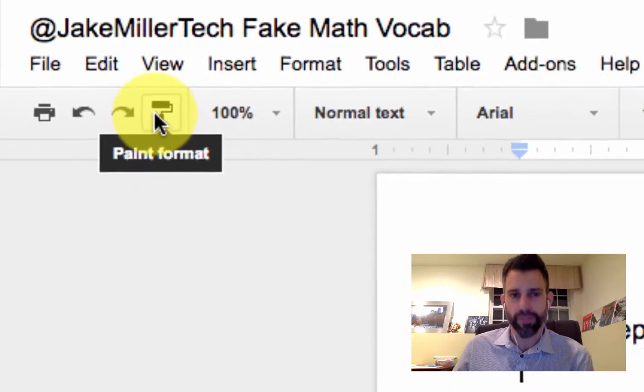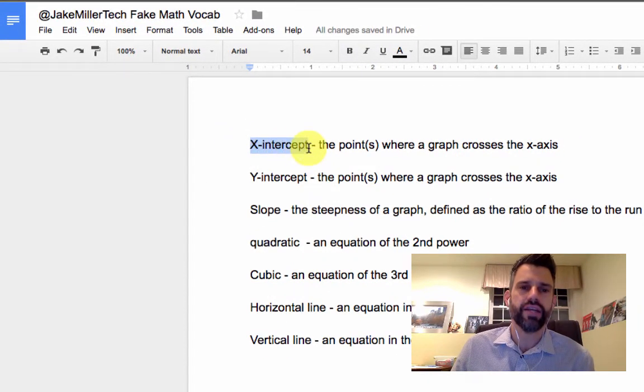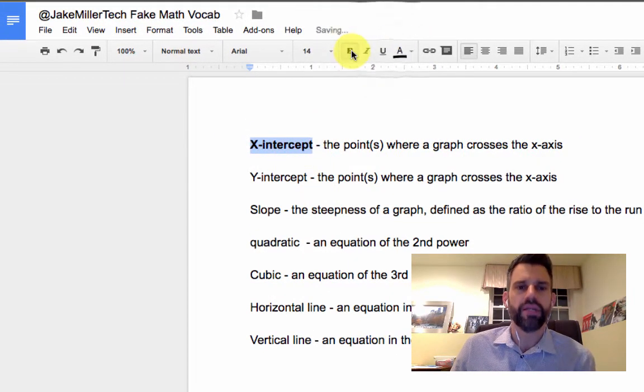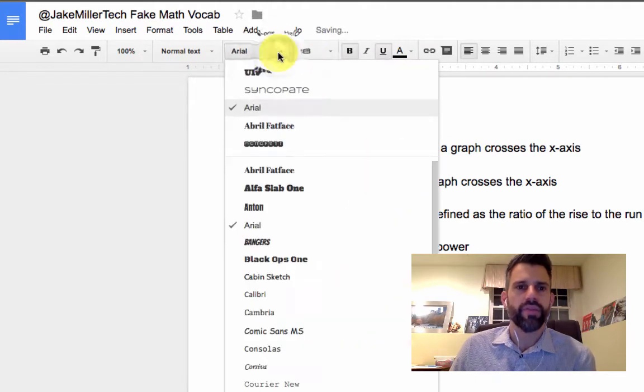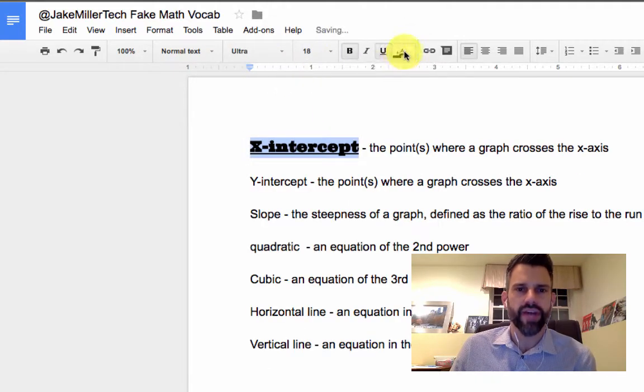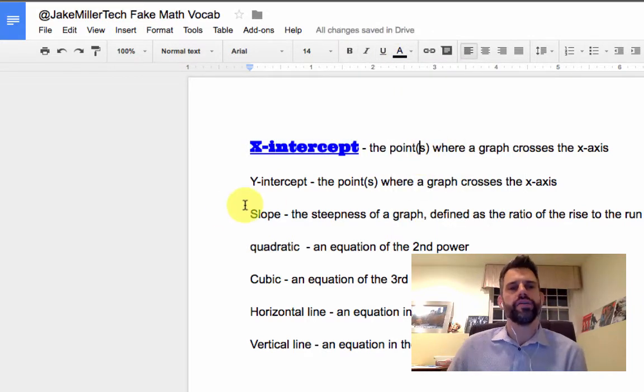Let's say this list that I have here in this Google Doc is a list of vocabulary words. After I'm done creating it, I decide you know what, I really should have taken the terms themselves, made them bold, made them underline, made them a little bit bigger, made them stand out by making them a different type of text and made them blue.